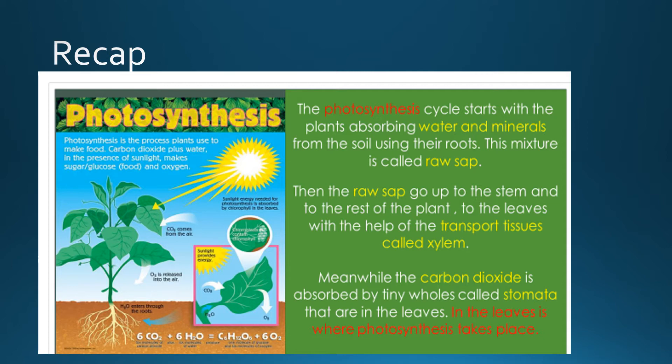As you heard in the song, we studied that the cycle of photosynthesis starts with the plant absorbing minerals and water from the soil. This water and minerals are going to go up — absorbed by the roots, then going up through the stem. The raw sap is going to go up and be distributed through the transport tissue that we call xylem to all the parts of the plant.